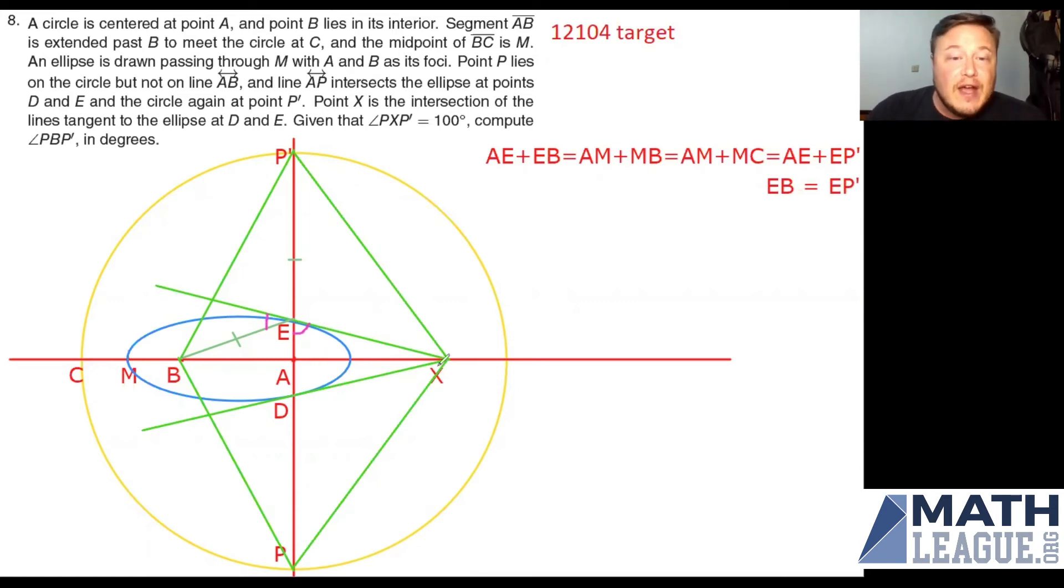Now I've got those two, but take a look at this. XEA is one angle, and the angle that's vertical to that is congruent to it as well.